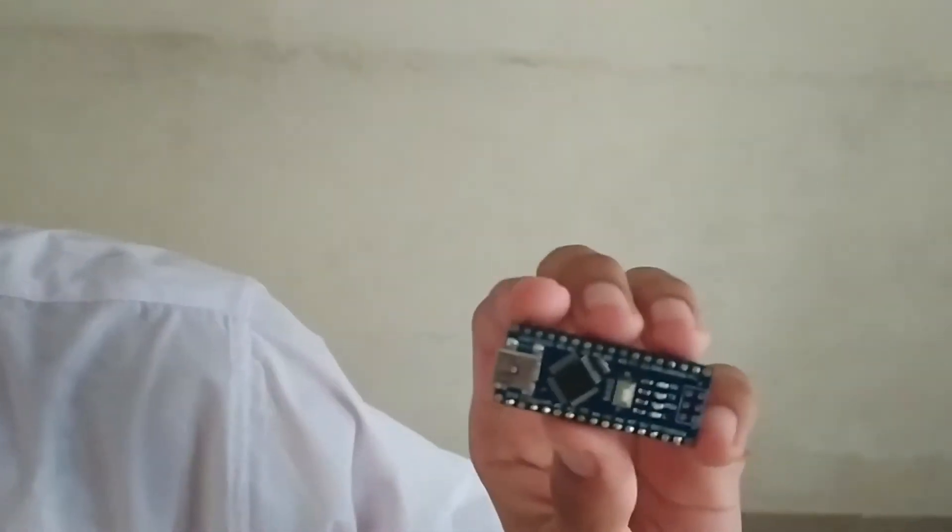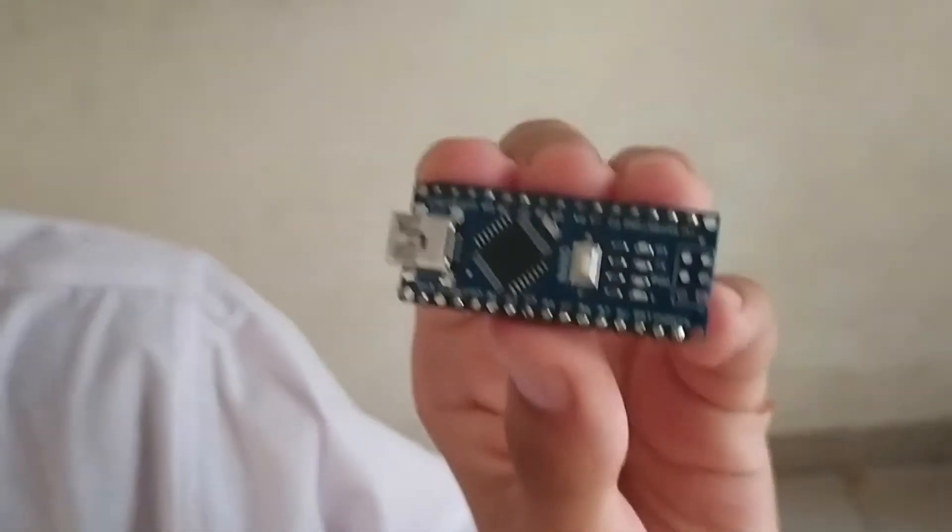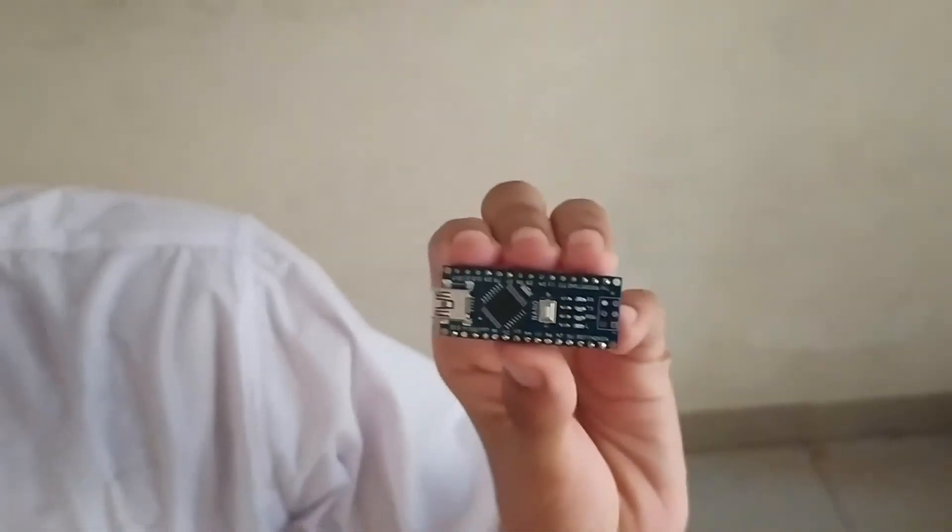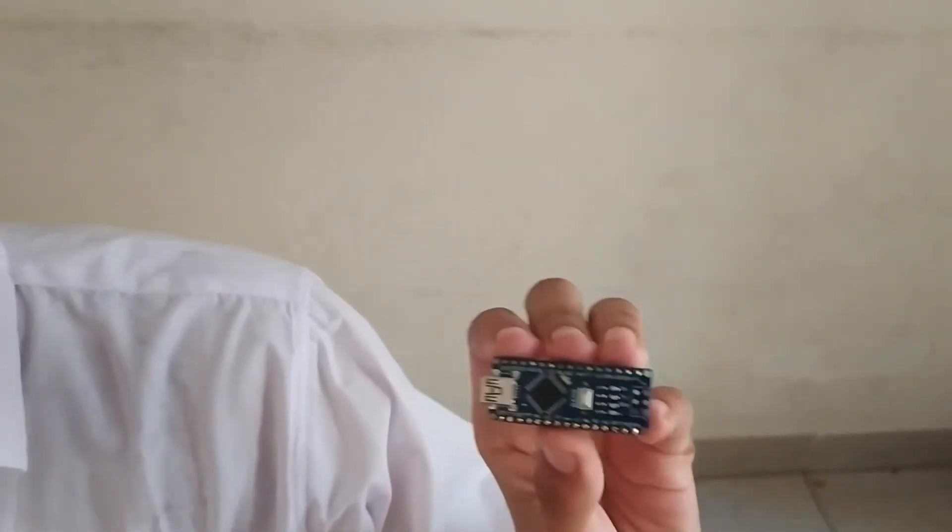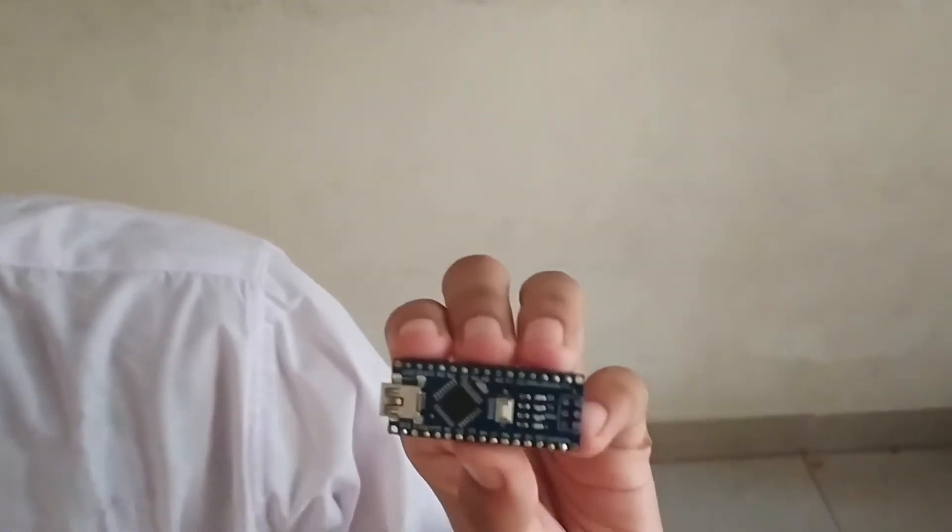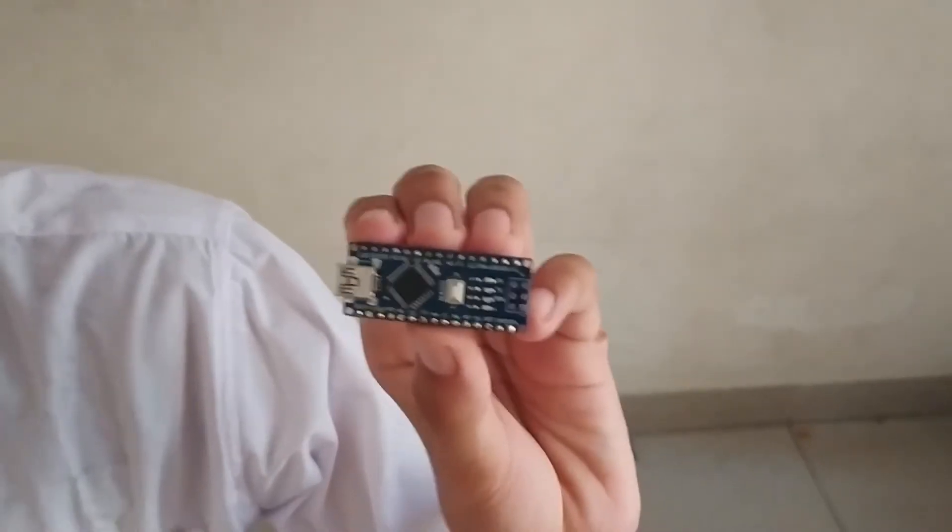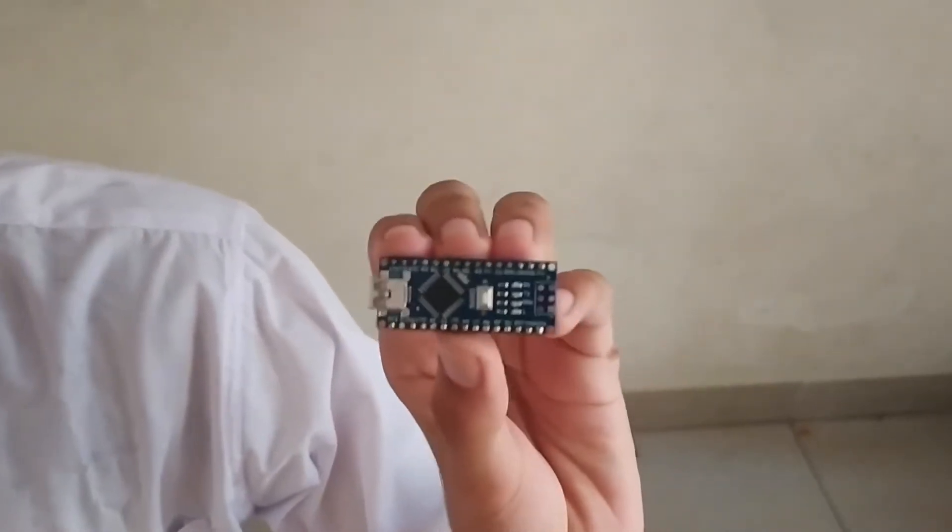This is an Arduino Nano. It is a small microcontroller board and also a minute version of Arduino Uno. It has a microcontroller named Atmega328. It has a wide range of applications and is a major board because of its small size and flexibility.